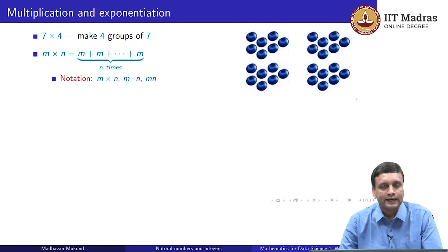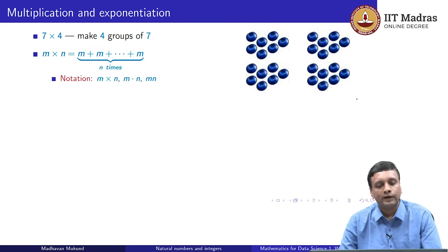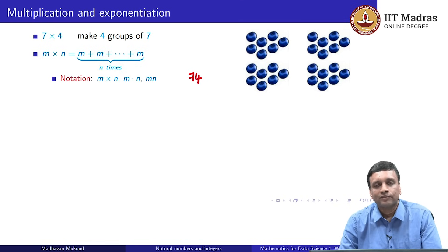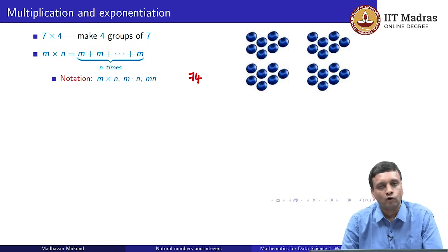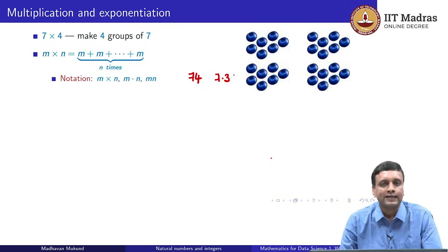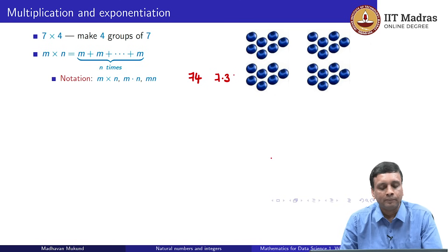We often use the times sign (×) for multiplication, but this is cumbersome in equations. Sometimes we replace it with a dot, and sometimes we write nothing at all. We do not usually omit the symbol between numbers — if I write 7 and 4 together, you would not know if it is 74 or 7 times 4. So for numbers we write a dot explicitly, like 7·3. But when we have variable names like m or n, writing mn means m multiplied by n.